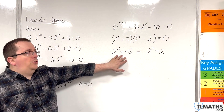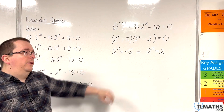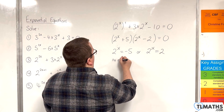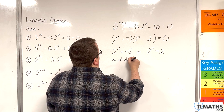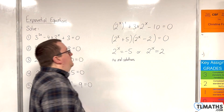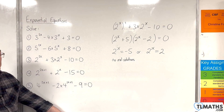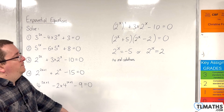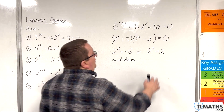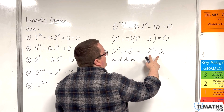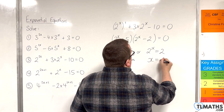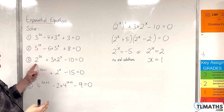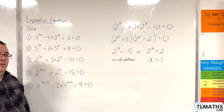The equation 2 to the x equals negative 5 has no real solutions, because we can't take the logarithm of a negative number. So the only solutions come from 2 to the x equals 2, which gives x equals 1. There is only one solution for the original equation: x equals 1.